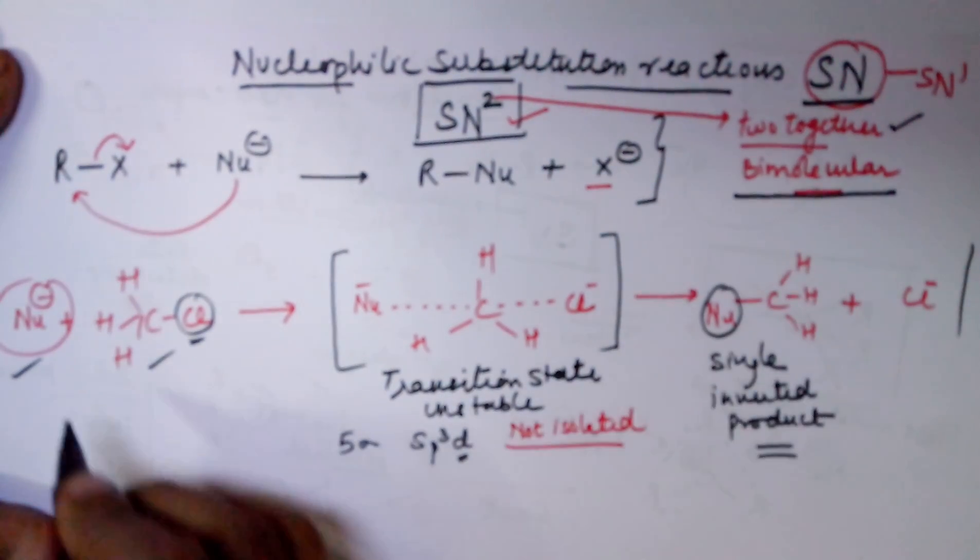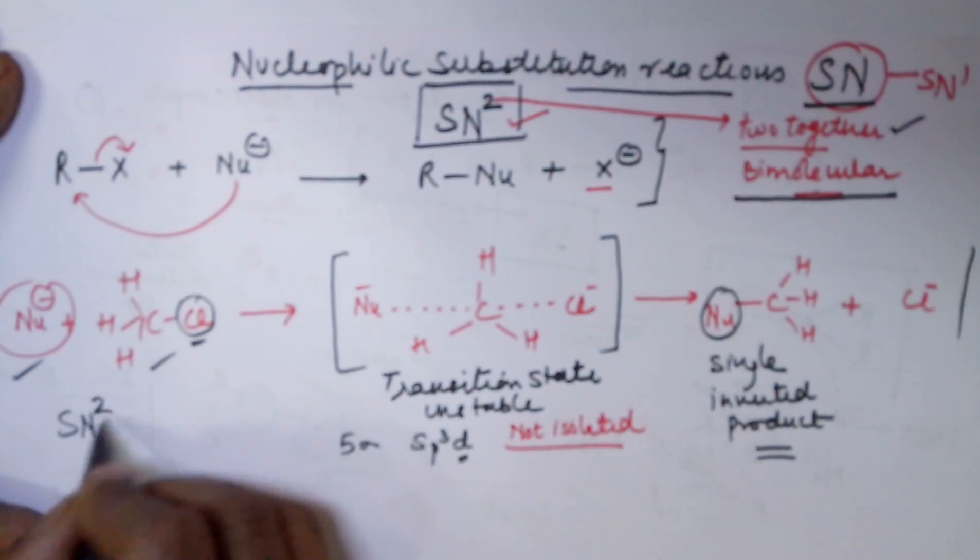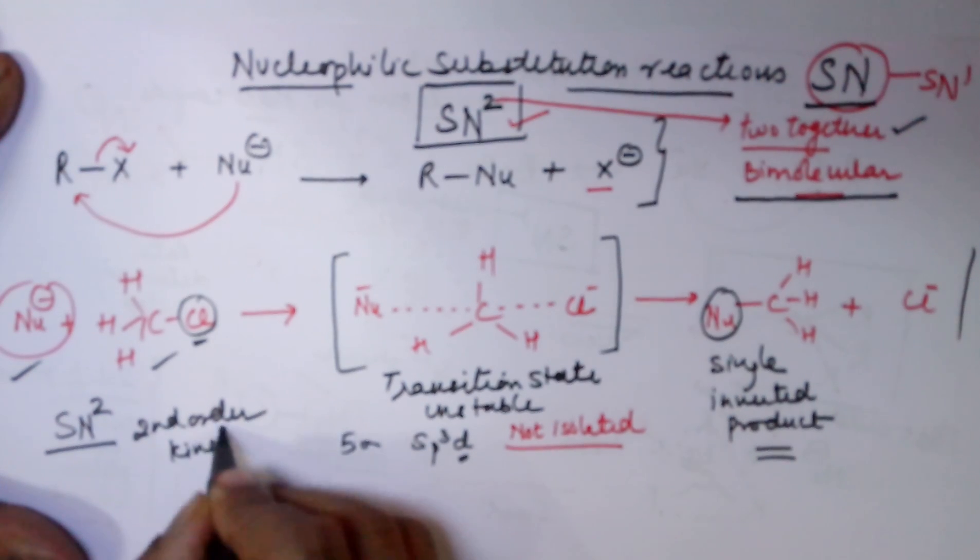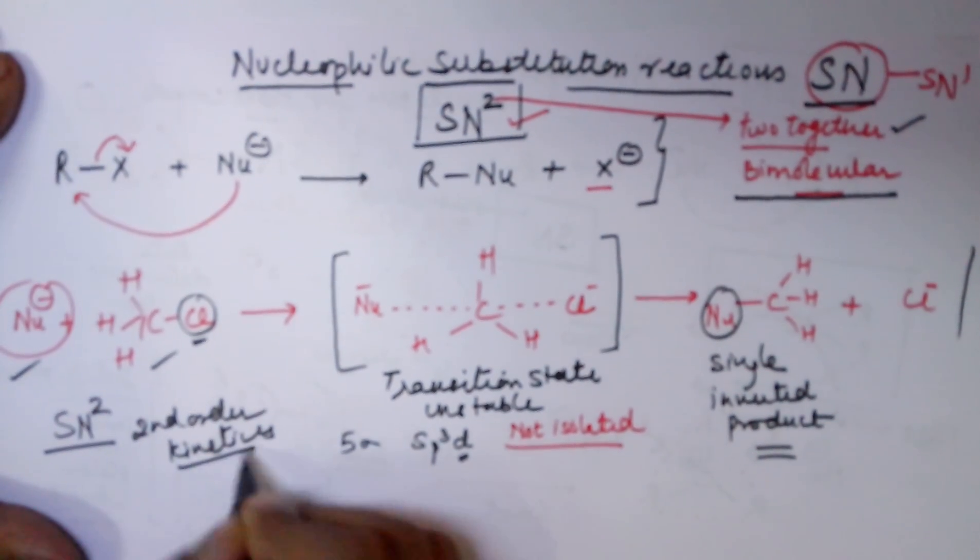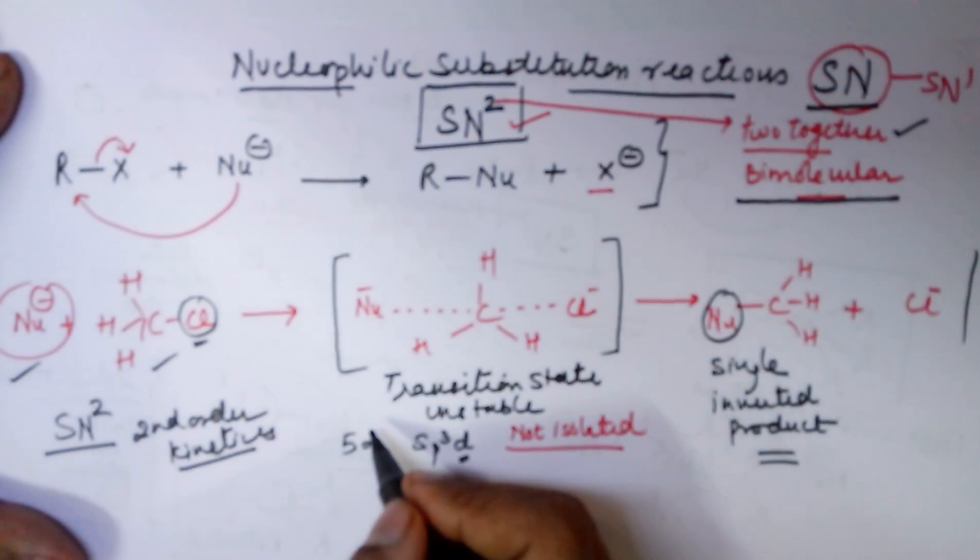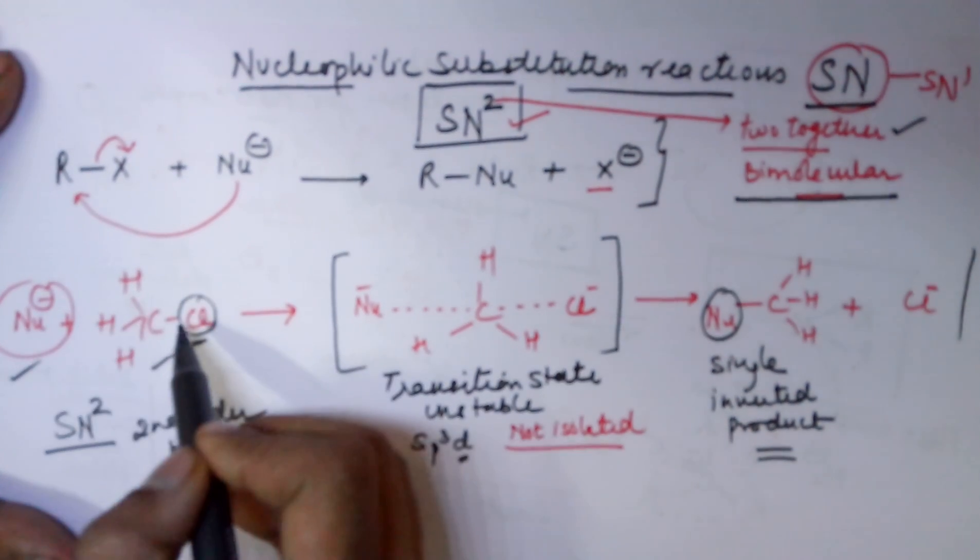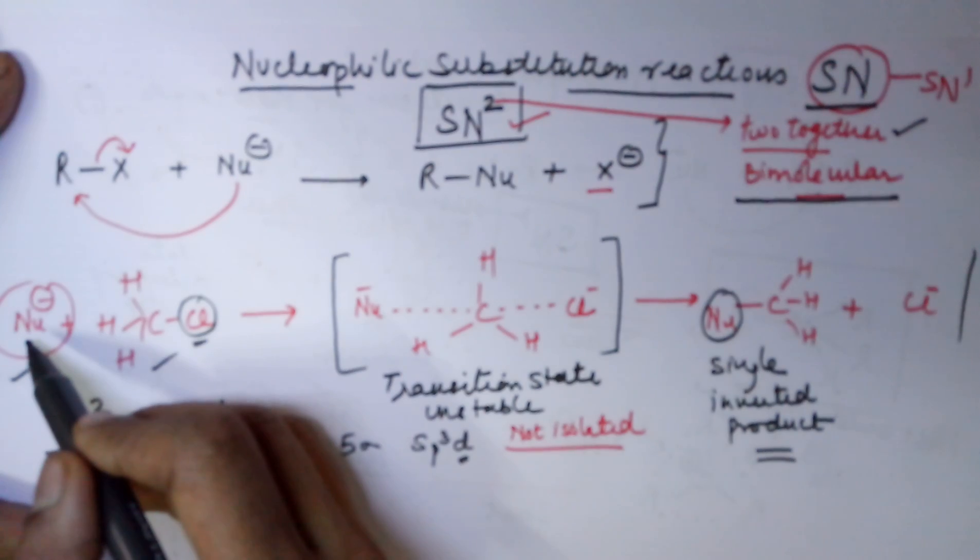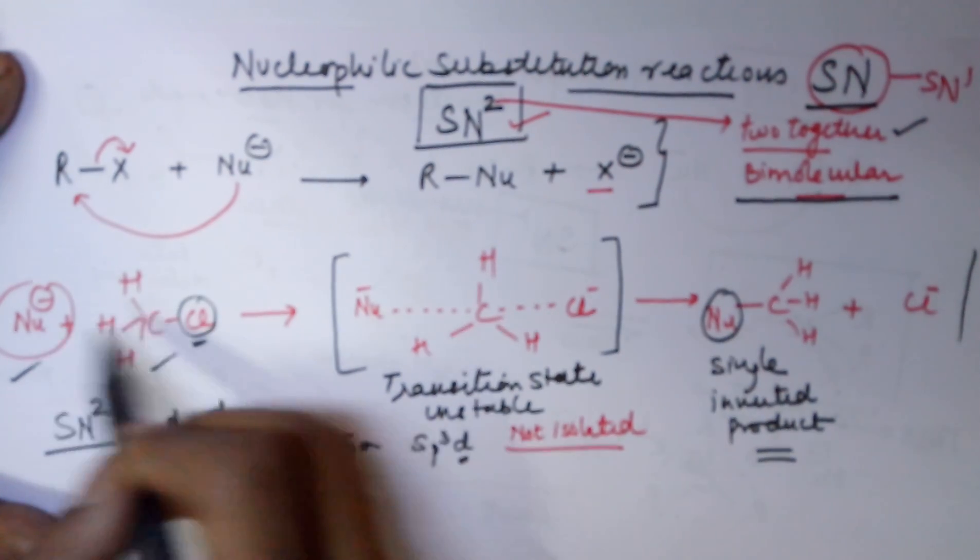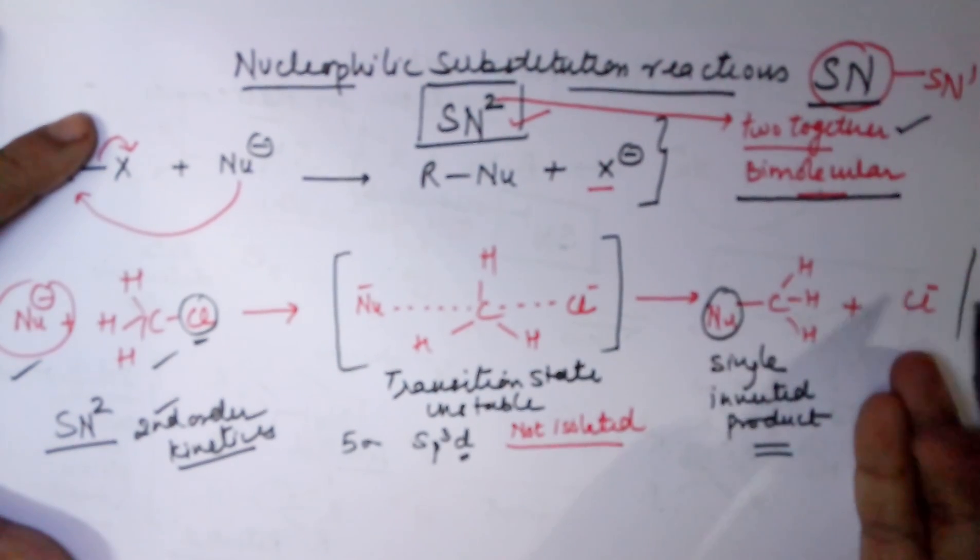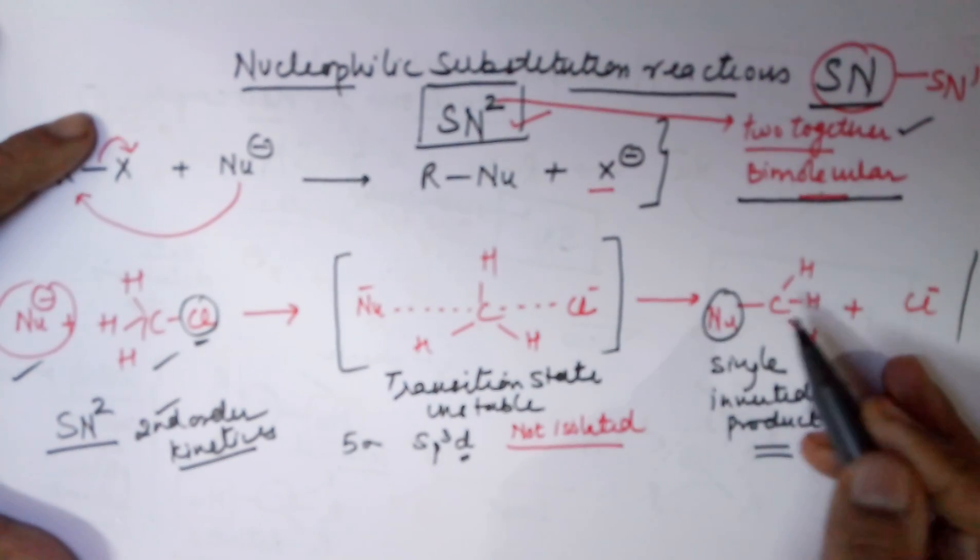Also said that the SN2 reaction follows second order kinetics. Second order kinetics means it depends on two reactants. The rate of reaction is dependent on alkyl halide as well as the nucleophile. The rate is dependent on two reactants. Such a reaction is called as a second order reaction. And you have a single product which will always be inverted.